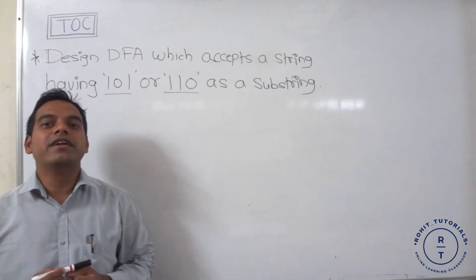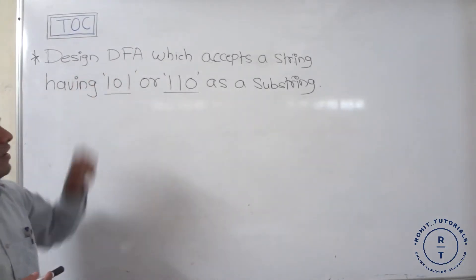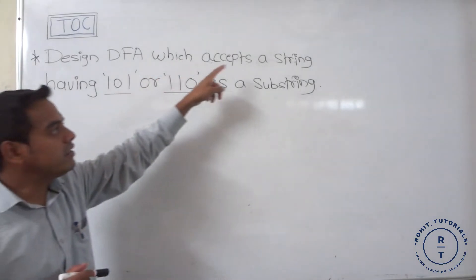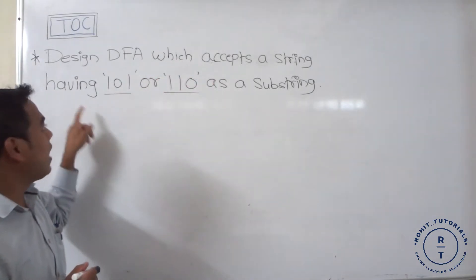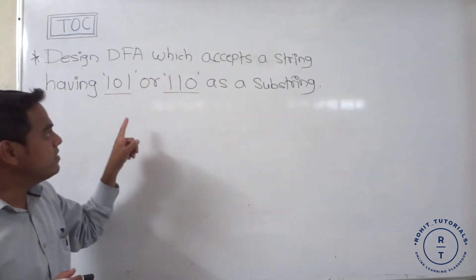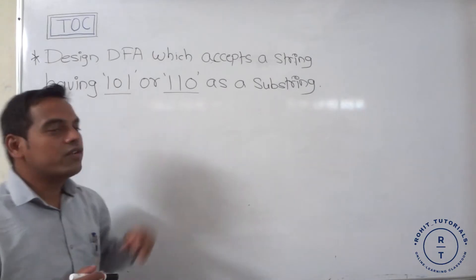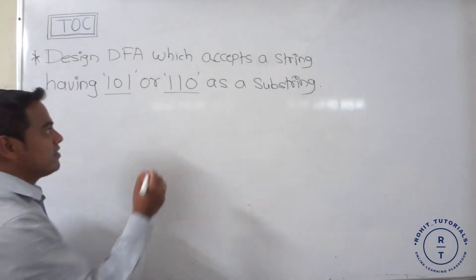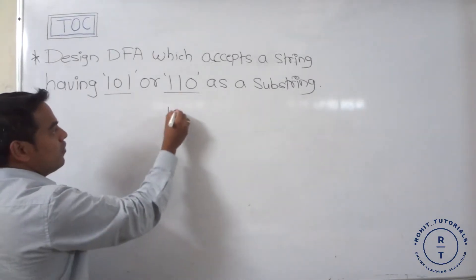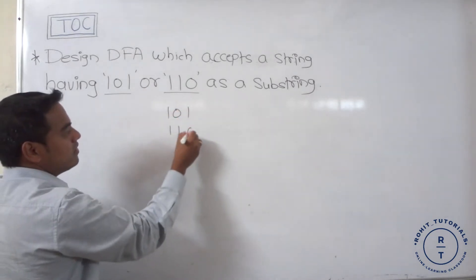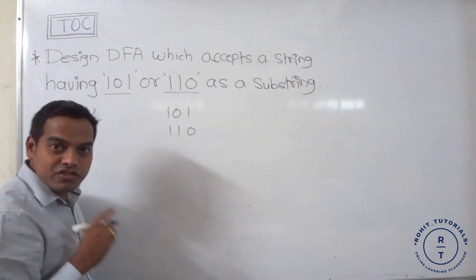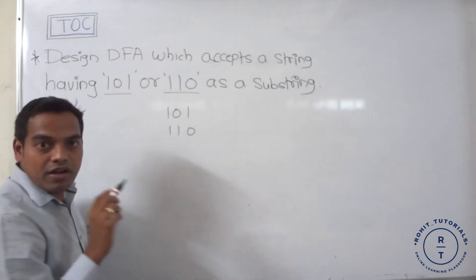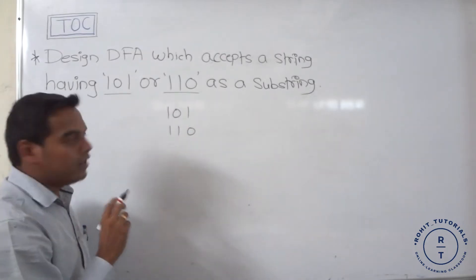The problem statement is: design a DFA — that is, a deterministic finite automata — which accepts strings having 101 or 110 as a substring. Strings consisting of 101 or 110 as a substring are accepted by our finite automata.